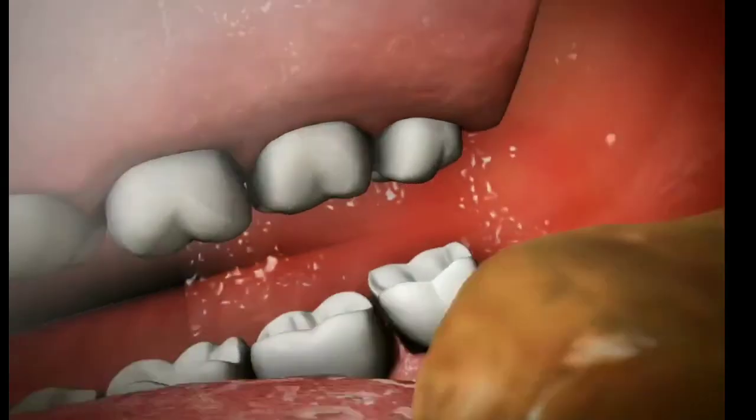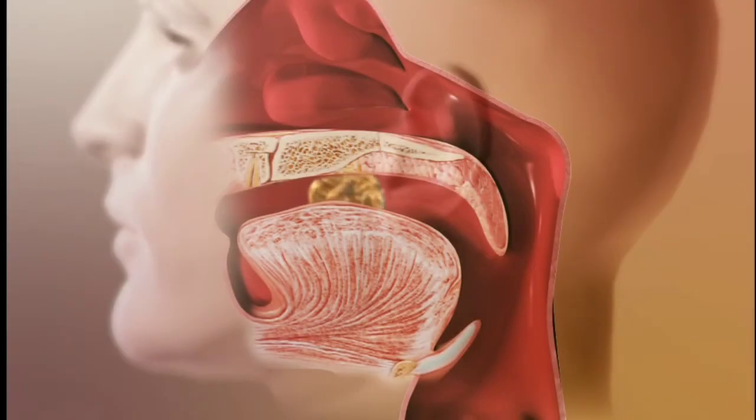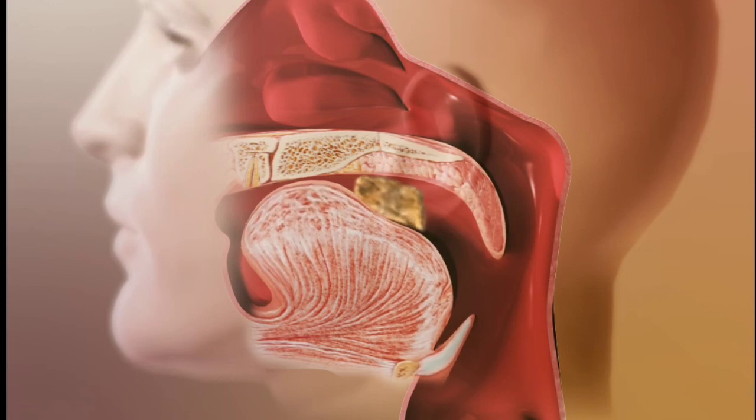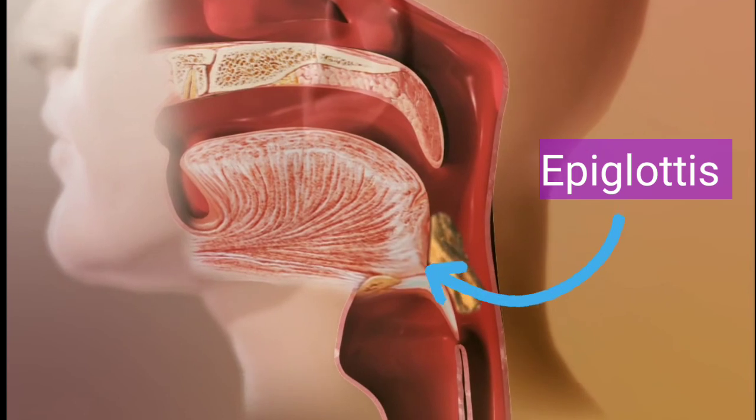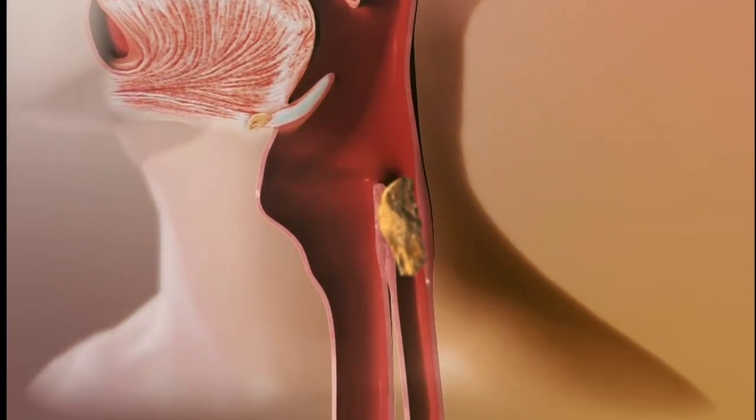Now coming back to the process of digestion. After mechanical breakdown, the food mixed with saliva is known as bolus. Bolus then passes to the pharynx, and then into the esophagus. The epiglottis prevents its entry into the windpipe. The peristaltic movements, which are controlled by the autonomic nervous system, push the bolus to the stomach.